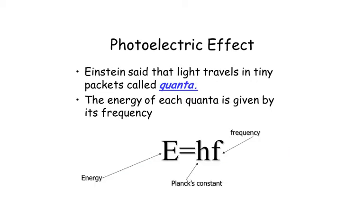This is where Albert Einstein came to the rescue. Einstein said that light travels in tiny packets called quanta. The energy of each quantum is given by its frequency, and here we have the equation: E is the energy of the photon, h is Planck's constant, and f is the frequency of the light measured in Hertz.